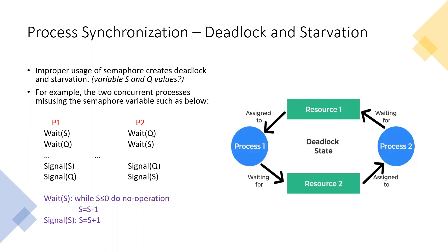Hi everyone, hope everything is fine. We were discussing process synchronization in our previous tutorial. We discussed the semaphore — record-based semaphore structure or binary semaphore structure. A semaphore is a process synchronization tool, like a shared memory variable. We have seen two operations: wait and signal. Process synchronization during deadlock starvation — so that is the way it happens.